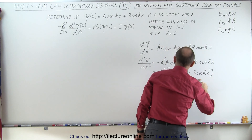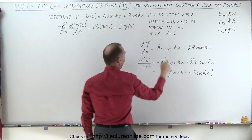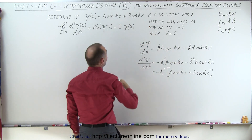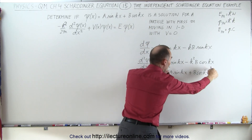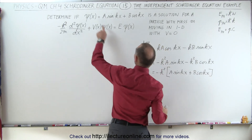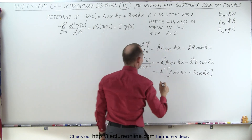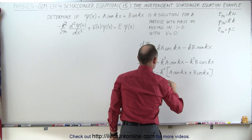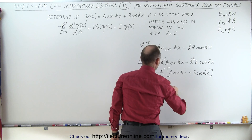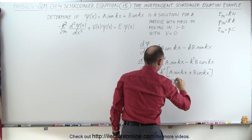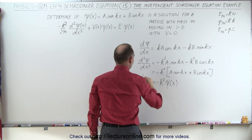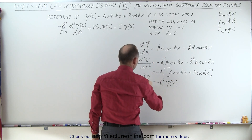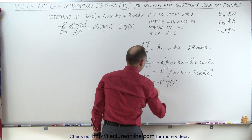Factoring out a negative and k squared, this becomes negative k squared times the quantity a sine of kx plus b times the cosine of kx. Looking at the original function, that's exactly what it is, so we can replace that bracketed portion with the wave function. This equals minus k squared times the wave function — that is the second derivative of the wave function with respect to x.